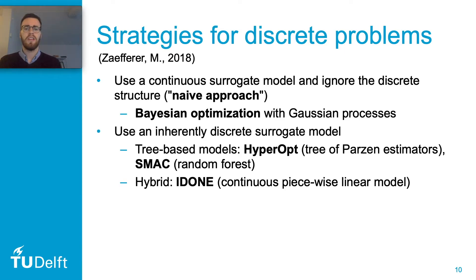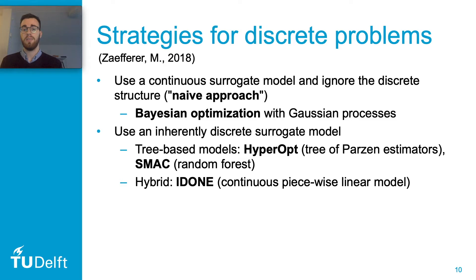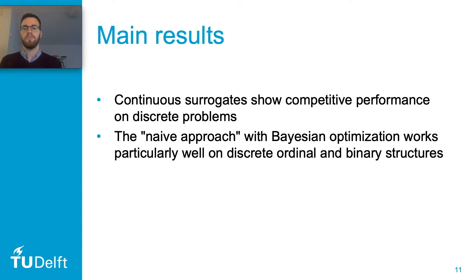The second strategy is to use a surrogate model which is built for discrete problems. For example, tree-based models as can be found in Hyperopt or SMAC — two well-known algorithms for these problems, typically used for hyperparameter tuning. Another algorithm built for discrete problems is IDON. IDON actually has a continuous surrogate model, in this case a piecewise linear model, but what makes it special is that it's guaranteed to return an integer solution when minimized. These are the four algorithms we're going to compare in the experiments.